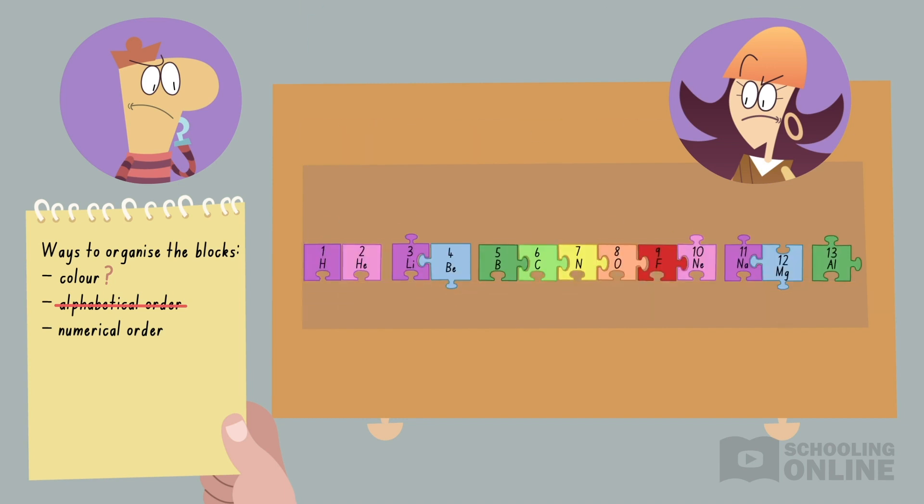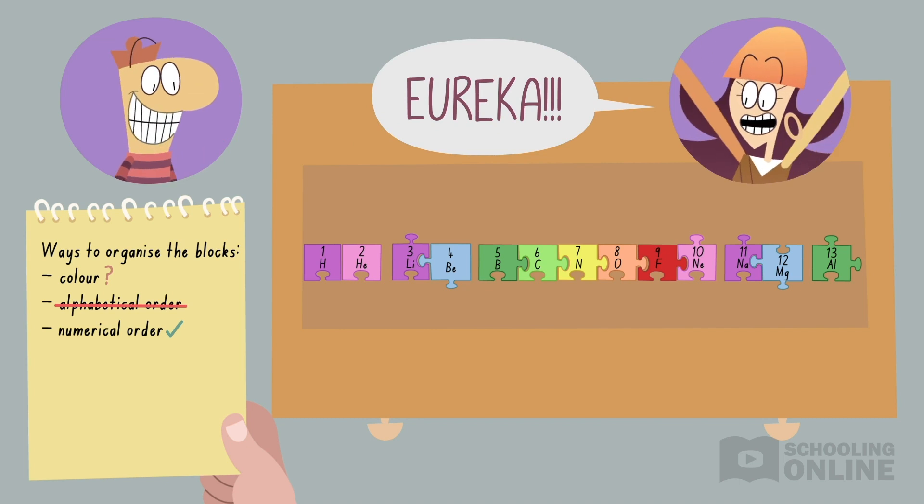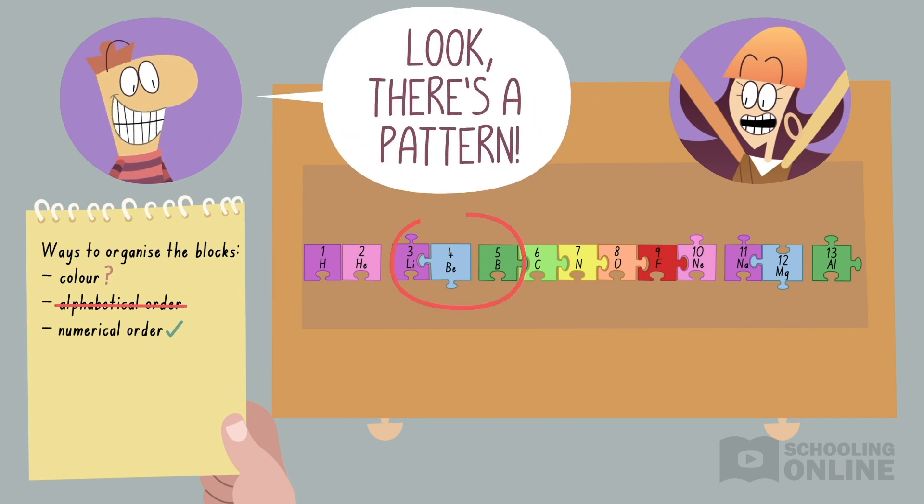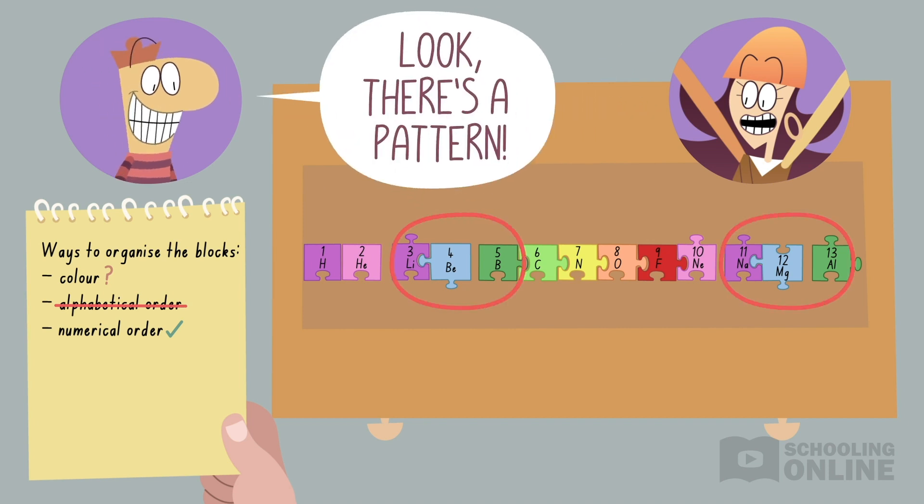Finally, they place the blocks in numerical order. This looks promising. There's exactly one block for each number. What's more, they notice that some blocks follow a colour-coded pattern. They must be on the right path.